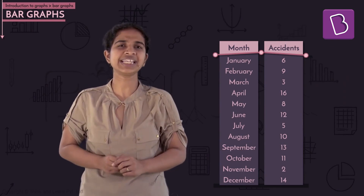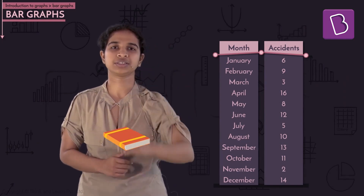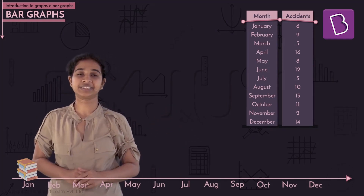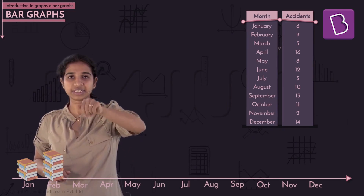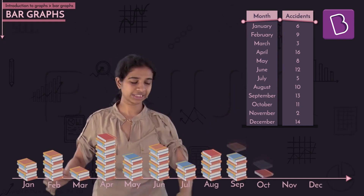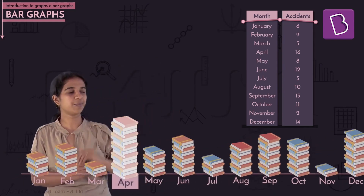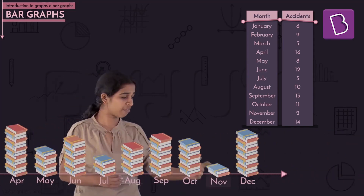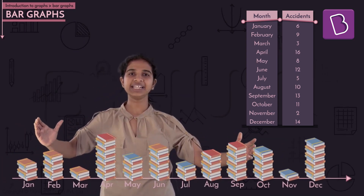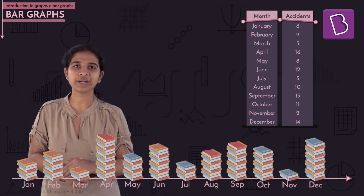We can do the exact same thing with the accident numbers — stack the accidents up, thinking of each accident as a book. January has six accidents, so we stack six books. February has nine, so nine books stacked up to here, and so on. Once all months are stacked, it's very easy to compare: April was the month with the highest accidents, November had the least. Suddenly it's far easier to make sense of this data.